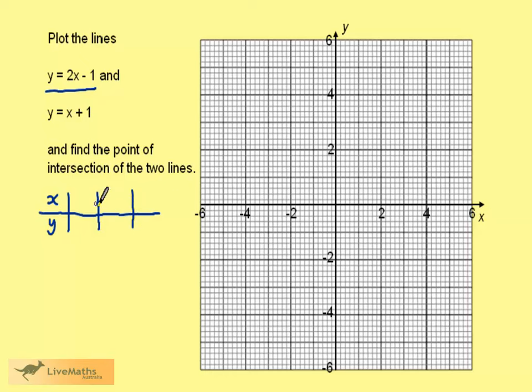Take some convenient values of x: 0, 1 and 2. If x is 0, 2 times 0 take away 1 is minus 1. If x is 1, 2 ones are 2 take 1 gives us 1. And if x is 2, 2 twos are 4, take 1 is 3.